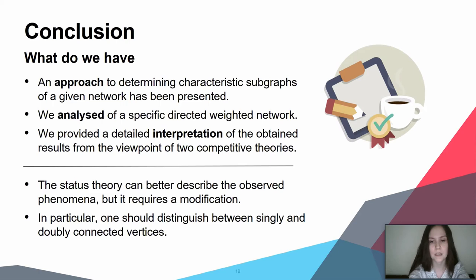Second, we carried out an analysis of a specific directed weighted network and provided a detailed interpretation of the obtained results from the viewpoint of two different theories: the structural balance theory and status theory. The results are quite remarkable. The considered network mainly agrees with the status theory if we exclude from consideration strongly tied vertices that are connected in both directions. The strongly tied vertices tend to be of positive-positive type. However, there exists a considerable proportion of other types of connections that indicate the need for a more detailed analysis of such cases.